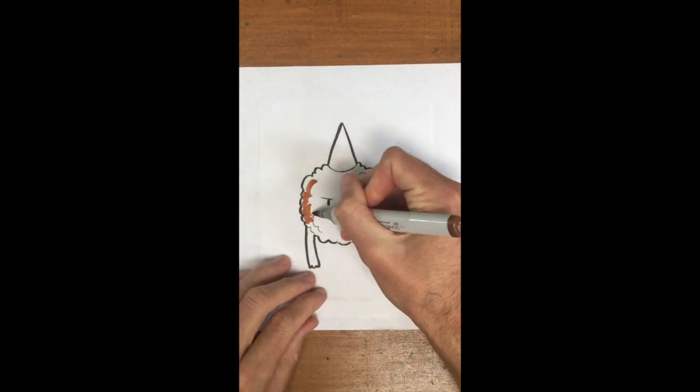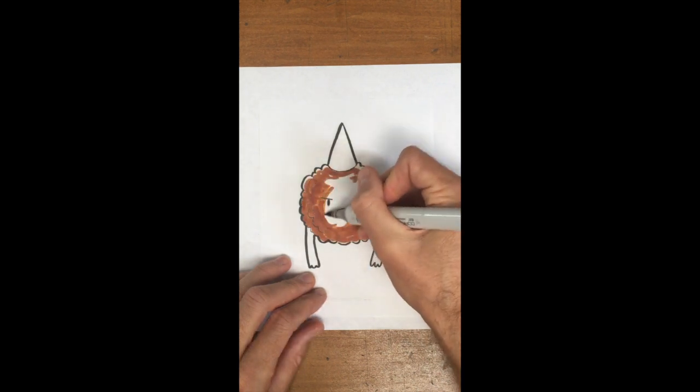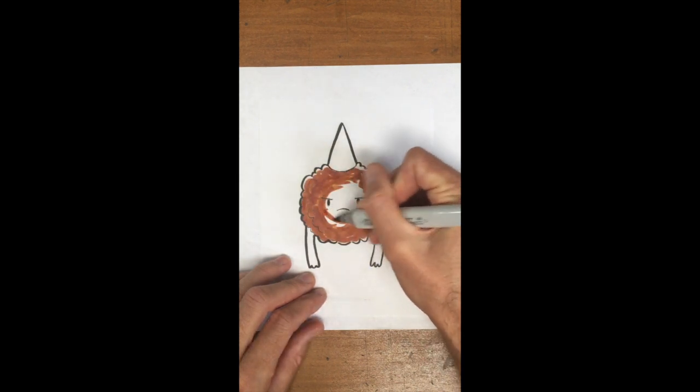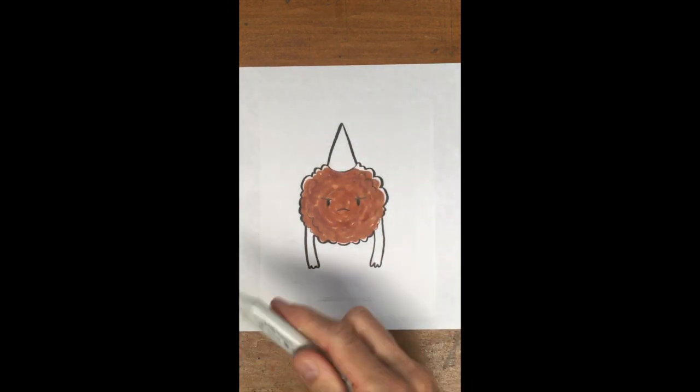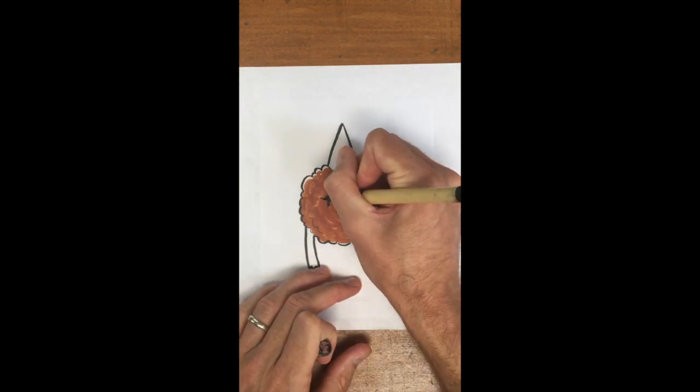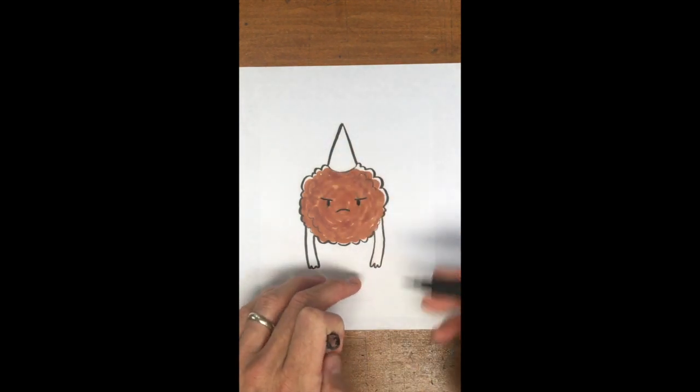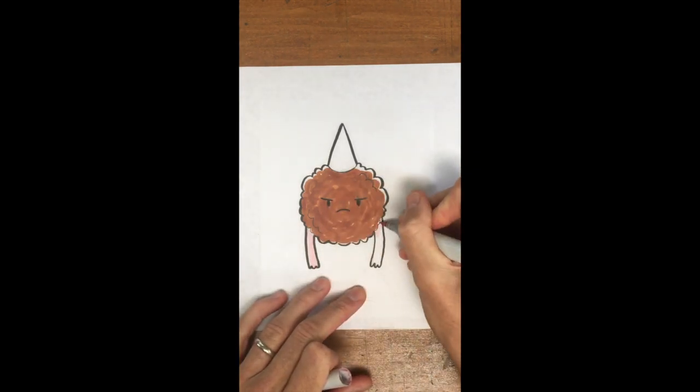Now it's time to color using a Copic marker. I buy Copics on Craigslist or eBay to save money, but you don't have to use Copic—any paint marker will do. I'm coloring in a circular motion to emphasize the texture, then I'll reestablish those lines with the brush pen and color the arms with a pink Copic.